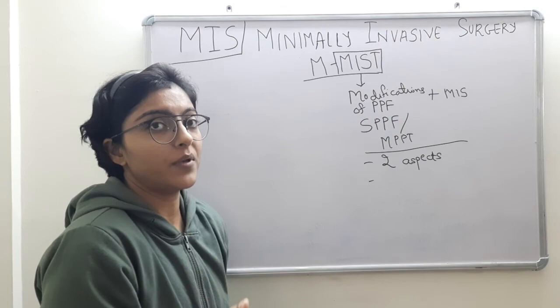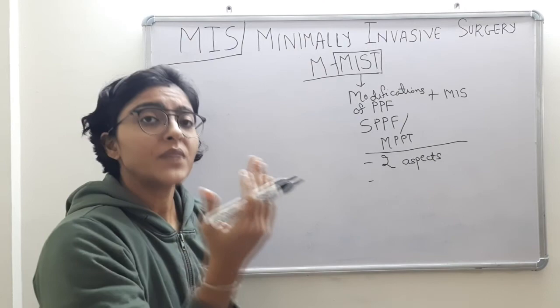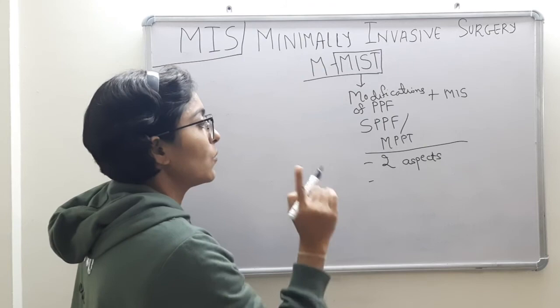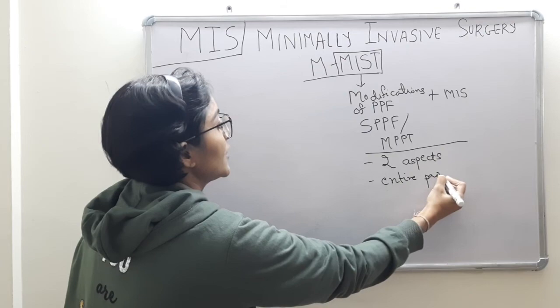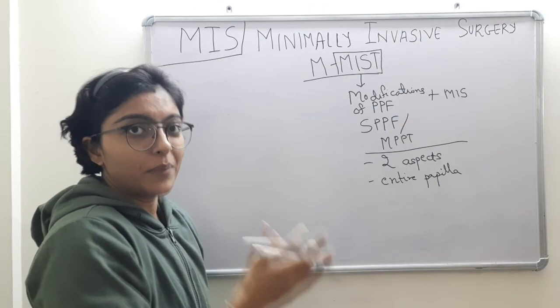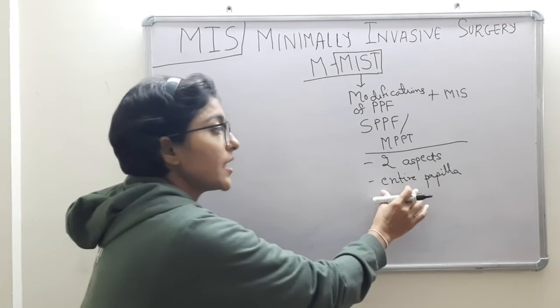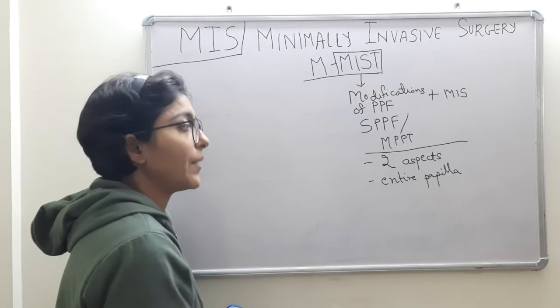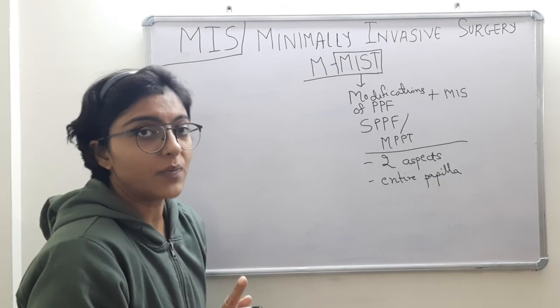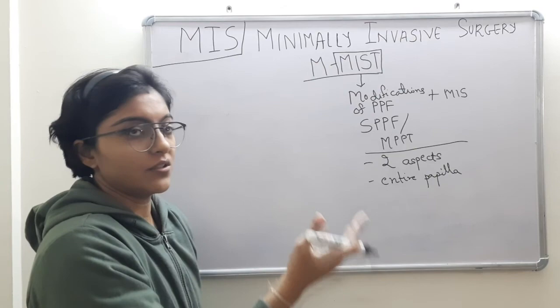There are two ways to manage the papilla: either you dissect the papilla or you preserve it. Under preservation of the papilla, there are two methods. One method involves the entire papilla being included in a single flap — either labial as per the conventional papilla preservation flap technique, or palatal as per modifications.